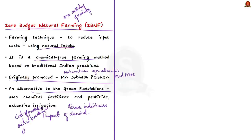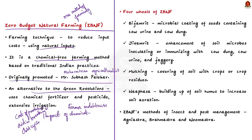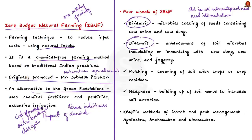According to Palekar, if the cost of production is reduced, farming might be turned into a zero budget activity, which would also aid in breaking the debt cycle for many small farmers. He recommends the four wheels of zero budget natural farming: Bijamrit, Jivamrit, Mulching, and Vaparsa.